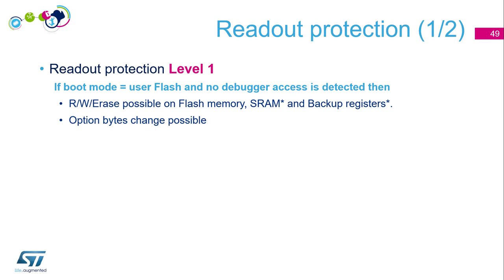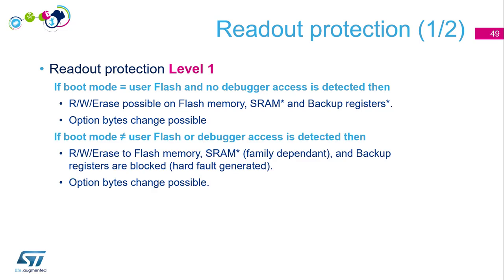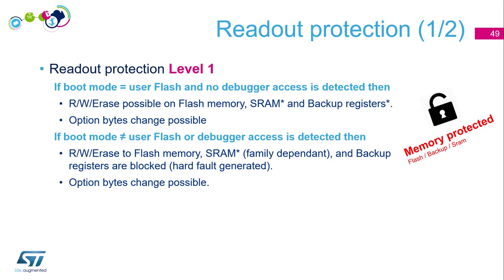The second case at RDP level 1: if you are booting from the embedded bootloaders or if the debugger is activated, then read, write, and erase to the flash memory, SRAM, and backup registers are blocked. SRAM and backup register protection is specific to some families. Option byte modification is still possible. So in level 1, you can no longer access flash content via embedded bootloaders or via the debugging link.